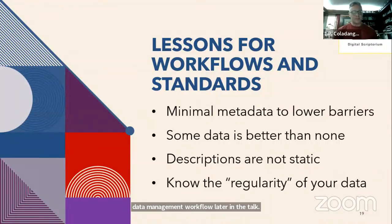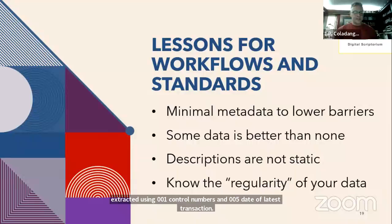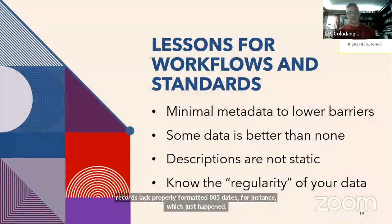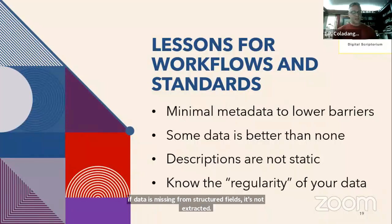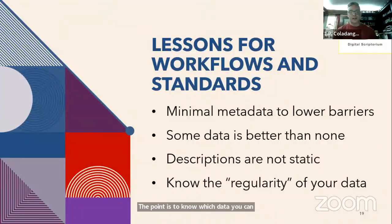I would encourage those with decision-making power working in or contributing to a linked data project to consider the potential value of having incomplete or even erroneous data out in the world. As scholarship continues and more is learned, new information can be added and corrections can be made. This is extremely evident with crowdsourced knowledge bases like Wikidata. It is important to note which metadata may be consistently available and how you have to improvise when records are malformed or irregular. For instance, when extracting data from MARC records, we validate using 001 control numbers and 005 date of latest transaction to ensure records are matched and imported correctly. If records lack properly formatted 005 dates, our extraction code breaks and we need to adjust. The point is to know which data you can reliably expect to be present across all records of that type and to have a plan for exceptions.